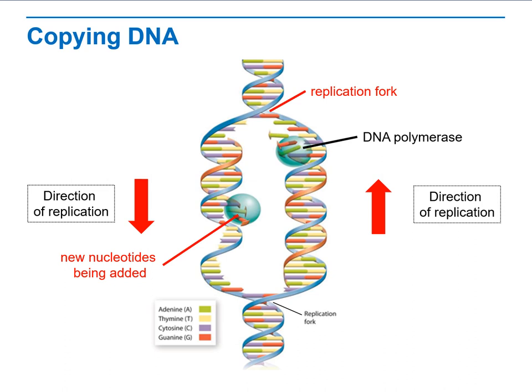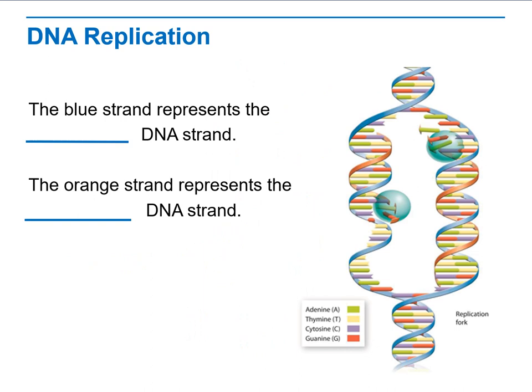As you can see, the new nucleotide is being added here. In DNA replication we have two strands: the blue strand representing the original — called the parent strand — and the orange strand, which is the new complementary strand. So the blue strands are the original DNA strand, and the orange one is the new DNA strand.